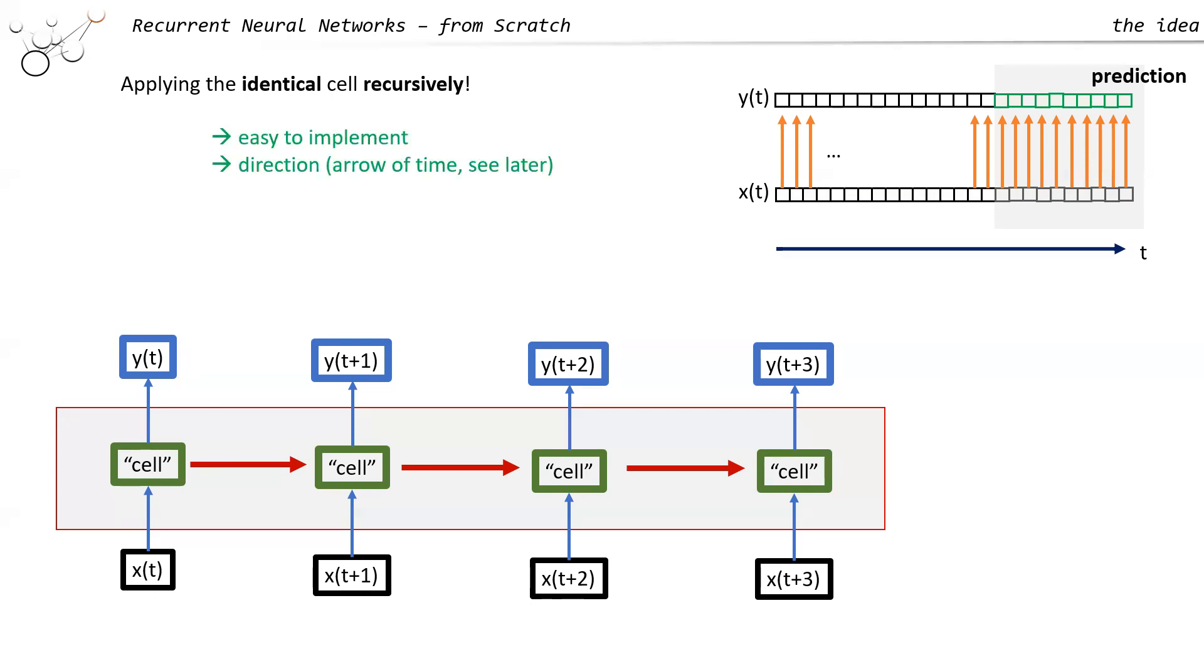The idea is that an RNN is really easy to implement. Remember it was invented in the seventies where people did not have the computational power by far that we have today. So it's very simple to implement. We also have a direction, an arrow of time, which you can see here by the idea, but you'll also see that later when we look at the backpropagation through time.